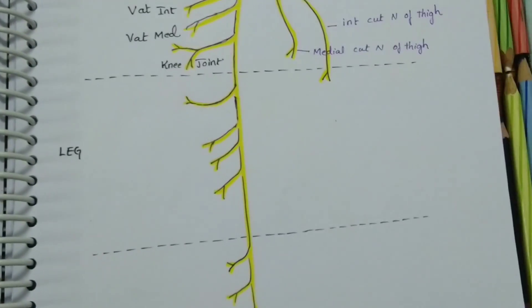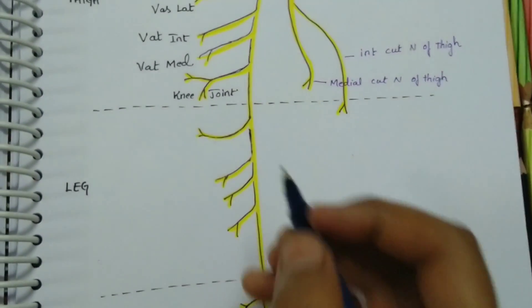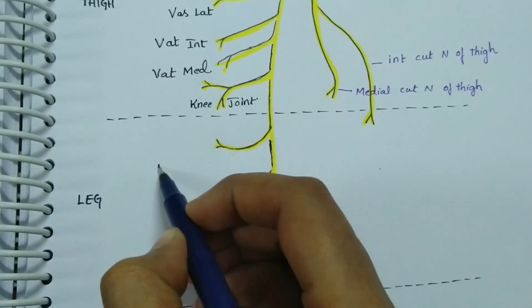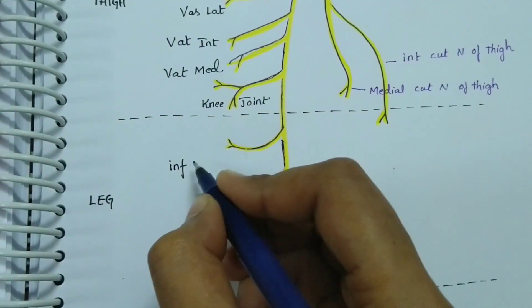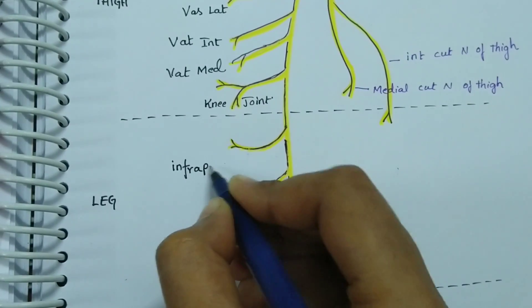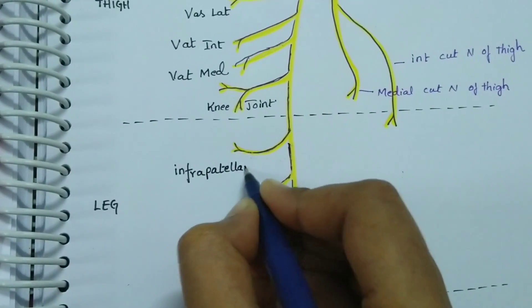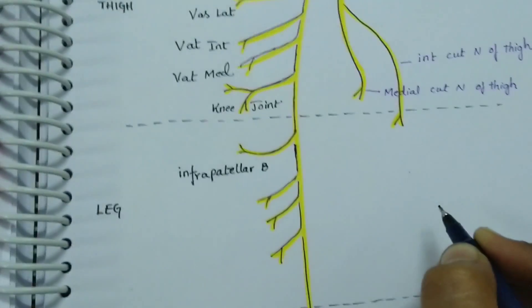Coming to the leg, in the leg it gives a branch below the patella, so it is called the infrapatellar branch.